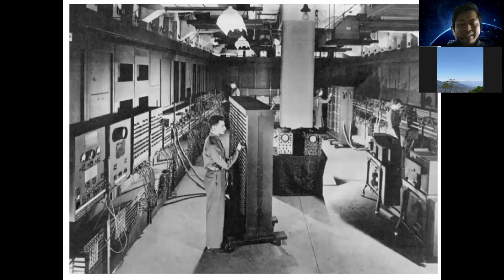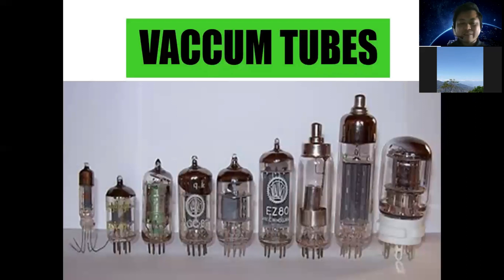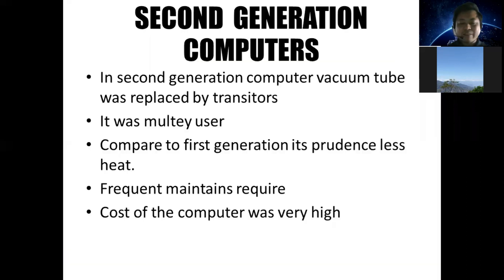First generation computers needed high power — special power from generators. After about 10 years, the vacuum tubes were replaced. In the second generation, vacuum tubes were replaced by transistors.